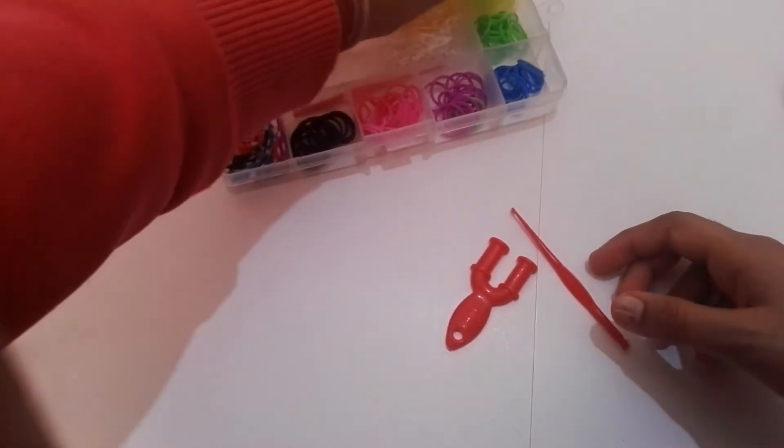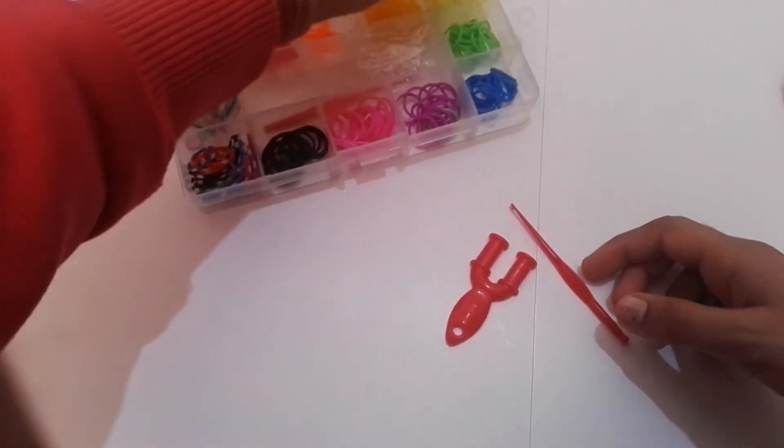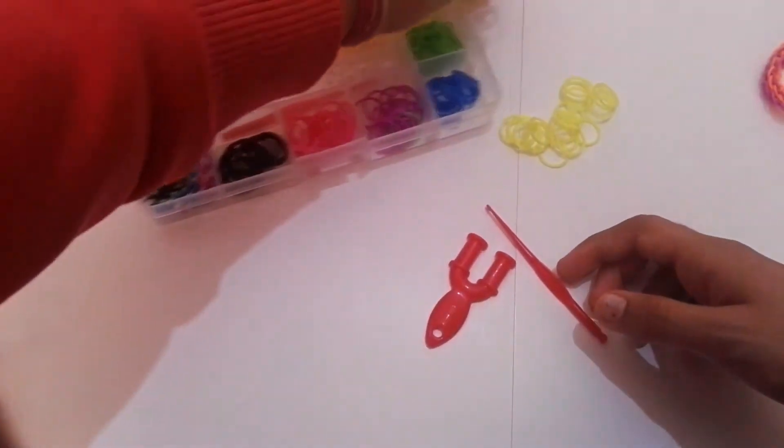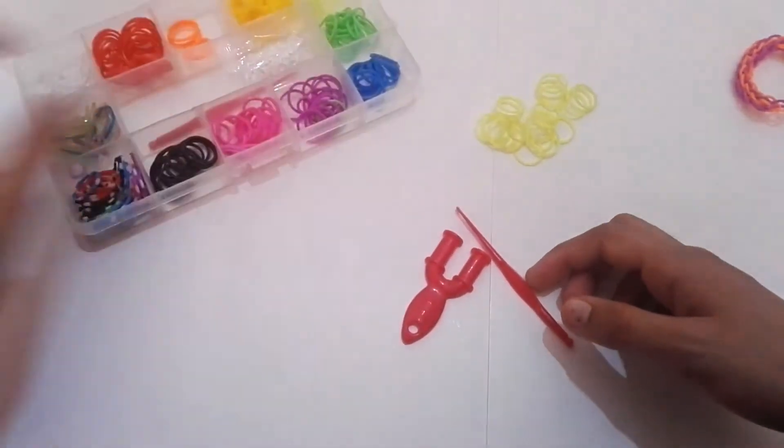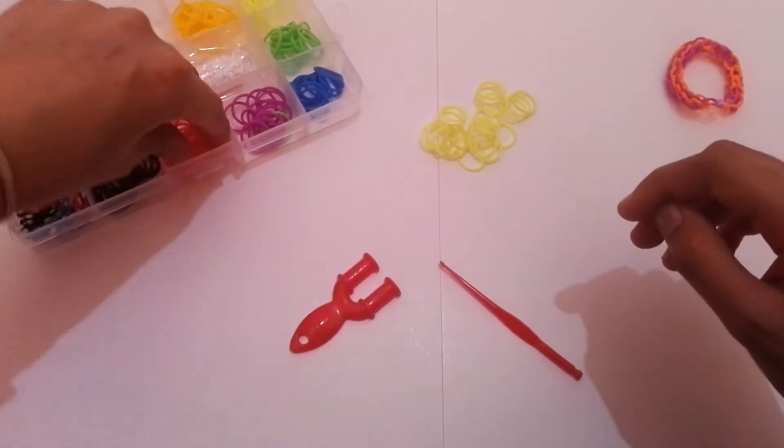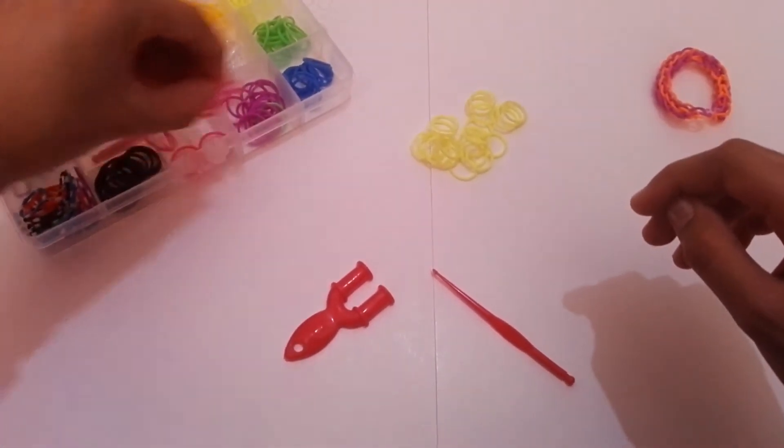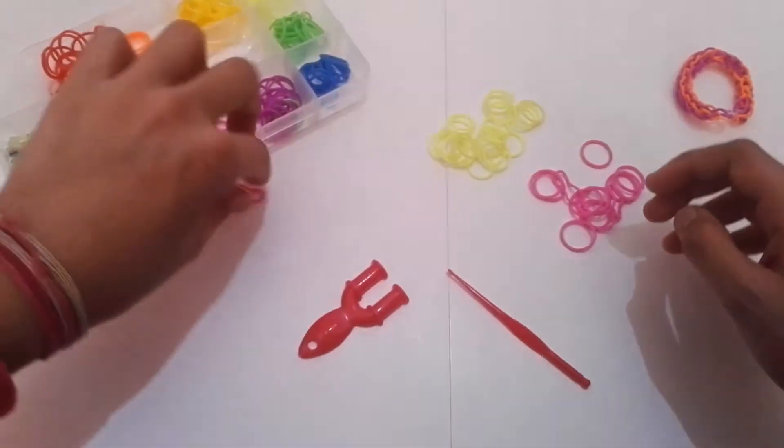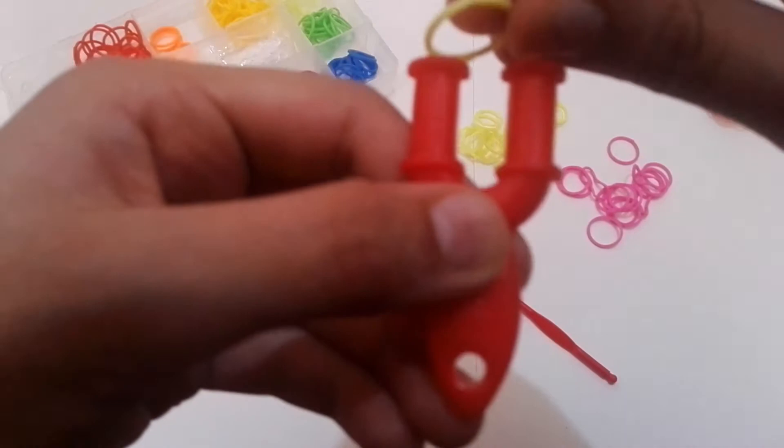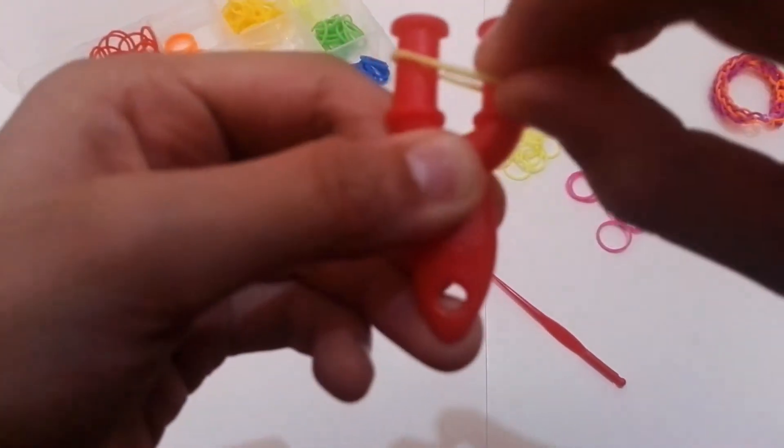I'm picking this yellow one because I have too many elastics, and I am picking pink. Pink, it's good. Okay, now let's start. Let's start with the yellow one, so you put the elastic like this.